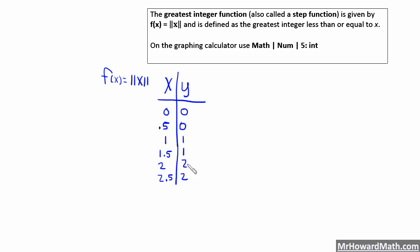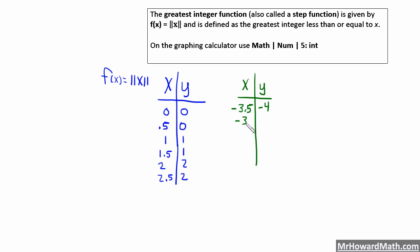Our outputs are never going to have decimal values — they're always going to be whole numbers, never any decimals. Now let's make a table of some negative inputs. If we put in negative 3.5, the output is negative 4 — not negative 3. The output for negative 3 is negative 3. Negative 2.5 gives negative 3. Negative 2 gives negative 2. Negative 1.5 gives negative 2. And negative 1 gives negative 1.